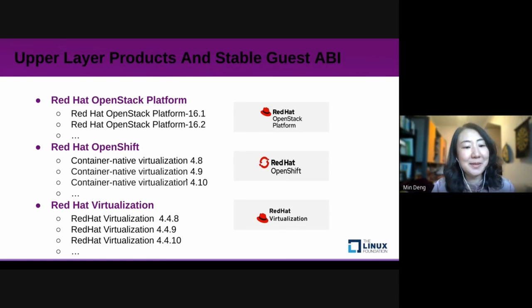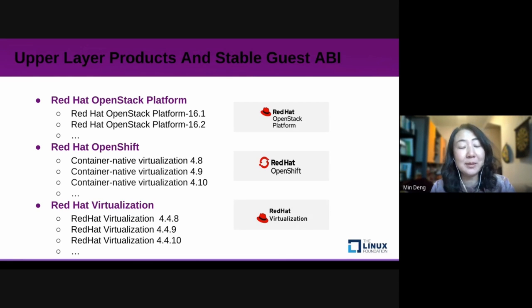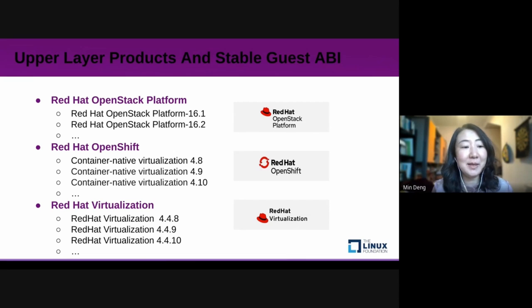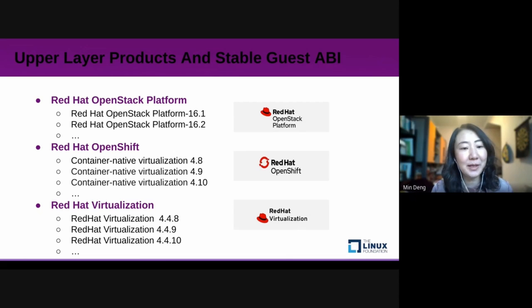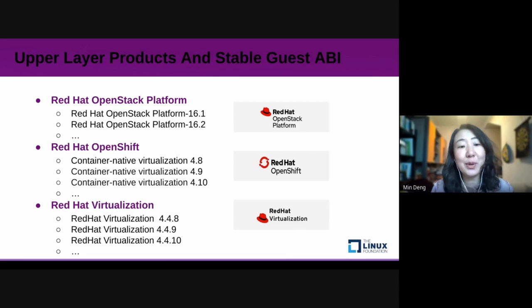For up-layer products and Stable Guest ABI testing, we need to know clearly which version of QEMU-KVM or RHEL has been integrated into the up-layer product. Before we start the test, we can benefit from this information and make the Stable Guest ABI test more accurate. I list Red Hat OpenStack, Red Hat OpenShift, and Red Hat Virtualization with different minor versions. Each version has a corresponding RHEL and QEMU-KVM version. We put them into the test metrics with high priorities.